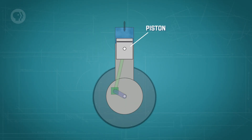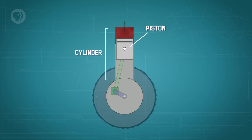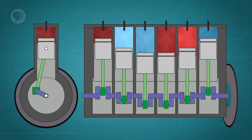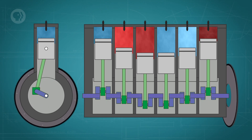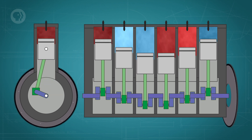Engines drive our society and many of the machines we use every day, and inside many of our engines are pistons. Pistons are discs or cylindrical parts that move back and forth in a cylinder against a liquid or a gas. In an internal combustion engine, like the one under the hood of most cars, the pistons are pushed by the expanding gases in the cylinder, which turns a type of shaft or wheel, converting their repetitive linear motion into rotation that helps power the engine.